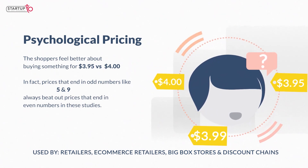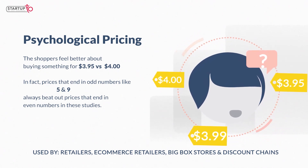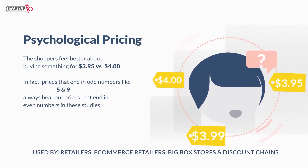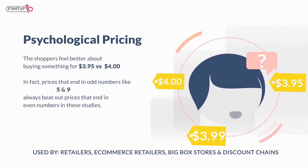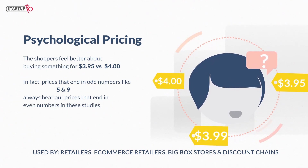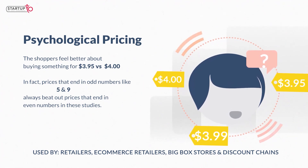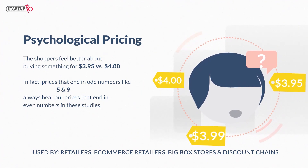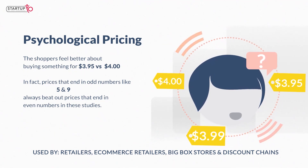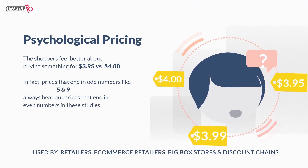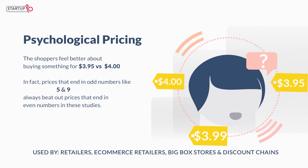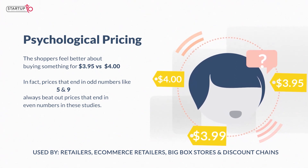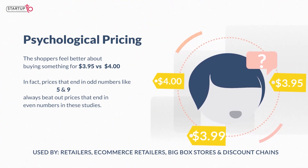Psychological pricing is used by retailers, e-commerce retailers, big box stores, and discount chains. Studies show that shoppers feel better about buying something for $3.95 versus $4.00. In fact, prices that end in odd numbers like 5 and 9 always beat out prices that end in even numbers. So whatever pricing strategy you settle on — MSRP, keystone, or another — remember to apply psychological pricing strategies as well.